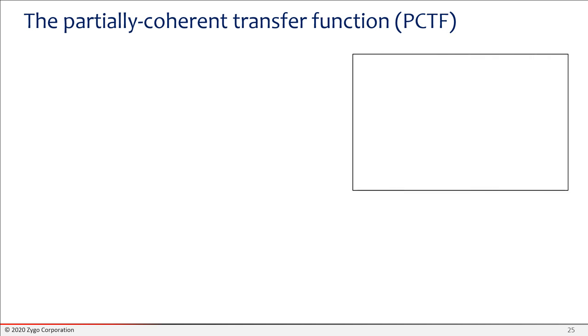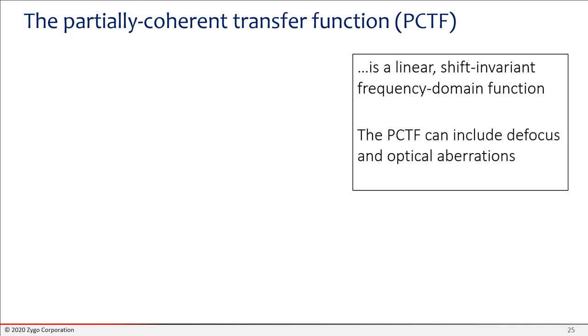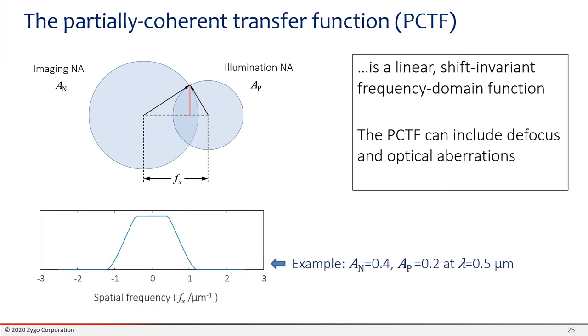The model uses a partially coherent transfer function, or PCTF. So what is that thing? It is a linear shift-invariant frequency domain function, and it includes the limiting apertures, but also defocus, optical aberrations, and so forth. If you've got a diffraction-limited system, then it's the cross-correlation of the illumination pupil and the imaging pupil. This is a calculation that's familiar in conventional microscopy for what's called, in that context, the apparent transfer function. And the result looks something like this as a function of spatial frequency. You see that things start to taper off as the cross-correlation starts to tend towards zero for the higher spatial frequencies.